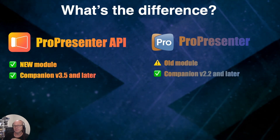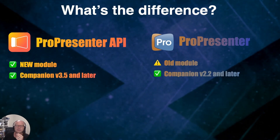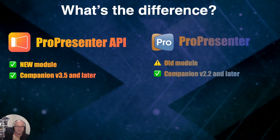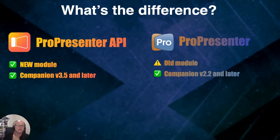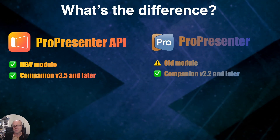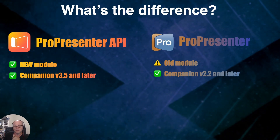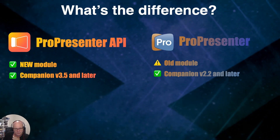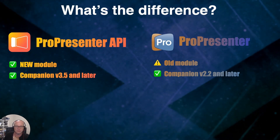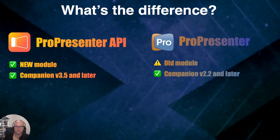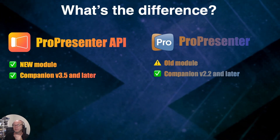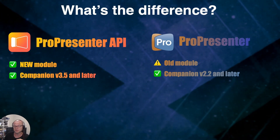If you're running Companion 3.4 or earlier and you look for ProPresenter API, you're not going to find it. It's a new module, available in Companion 3.5 and later. Whereas the old module exists in quite old versions of Companion, but also in the latest version alongside the new ProPresenter API module — hence there being two modules from Companion 3.5 onwards.